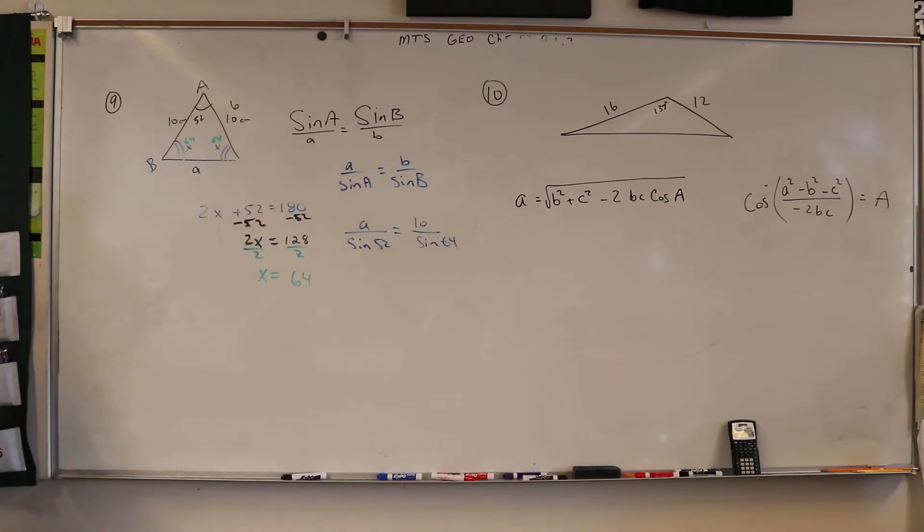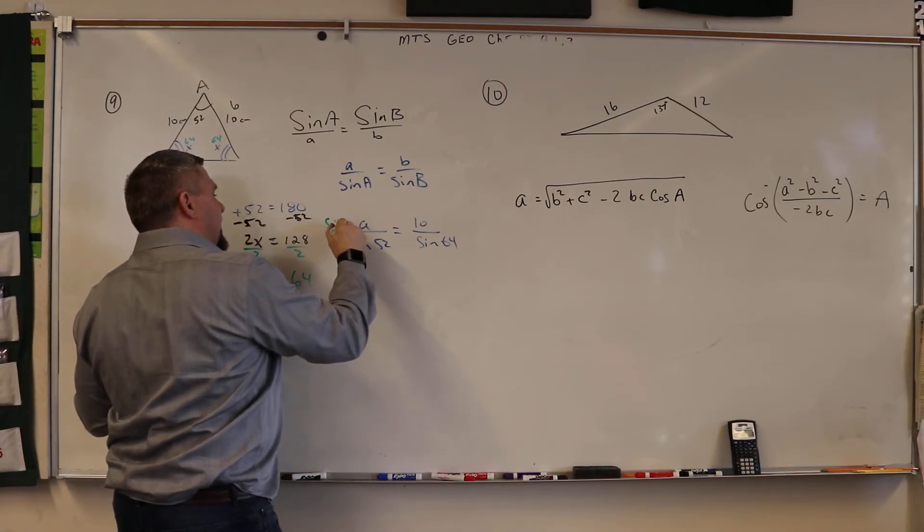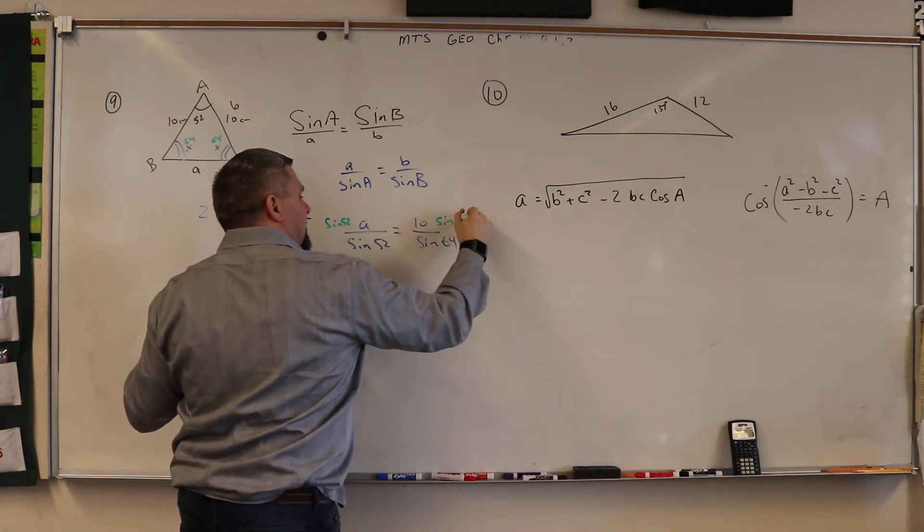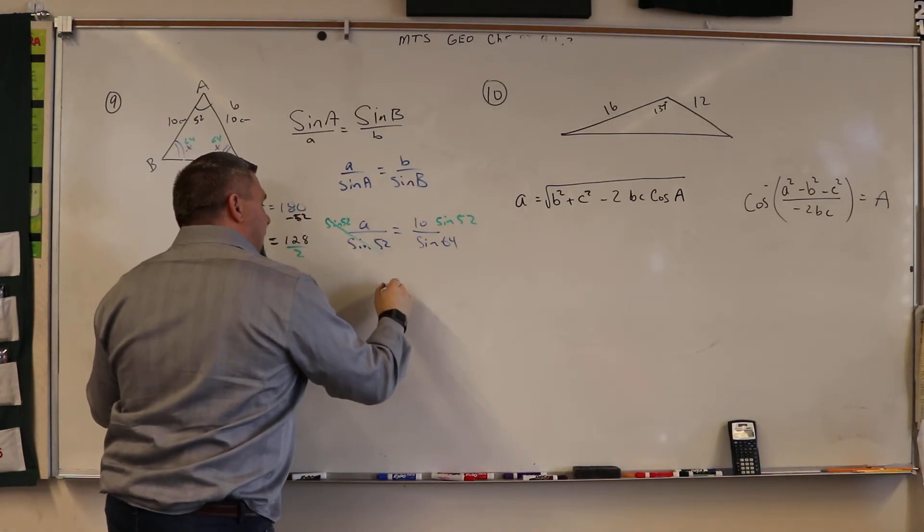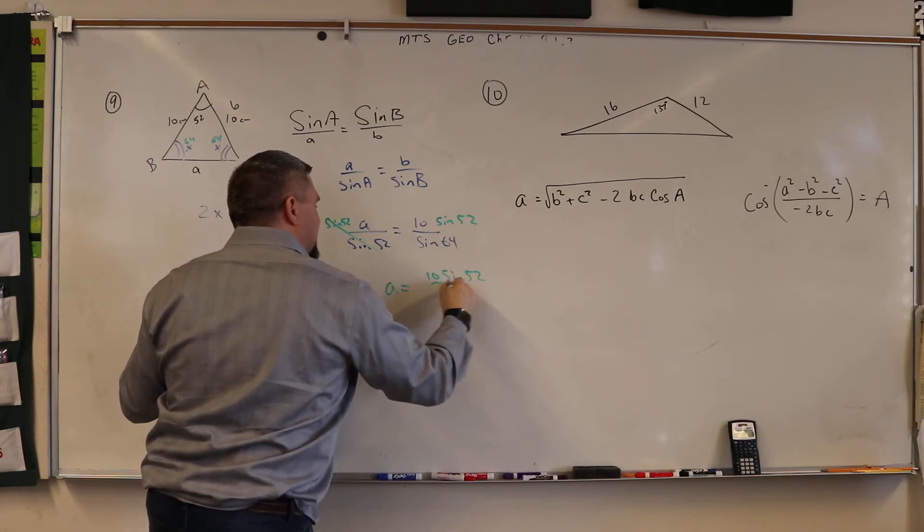Right, and then multiply both sides by the sine of 52, so that a is equal to 10 sine 52 divided by sine 64.